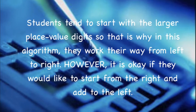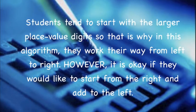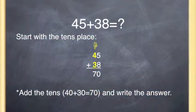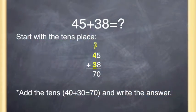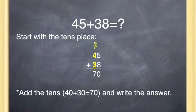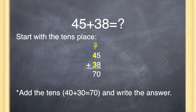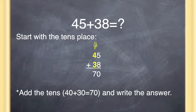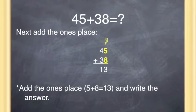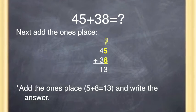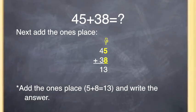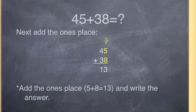However, it is okay if they would like to start from the right and add to the left. Alright, 45 plus 38 equals what? You are going to begin with the tens place, which is 40 plus 30, and that is going to equal 70 — write that answer underneath the line. Next, you are going to add the ones place, which is 5 plus 8, and that is going to give you 13 — write that number under the line.